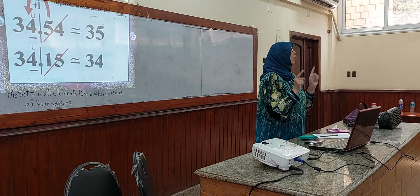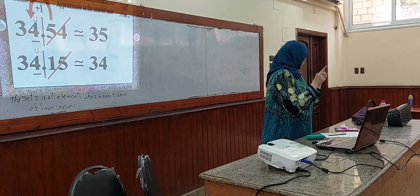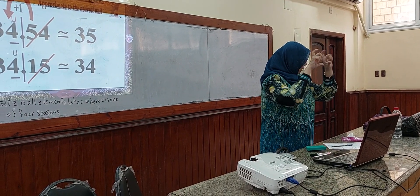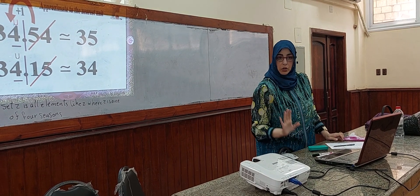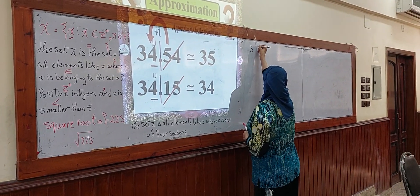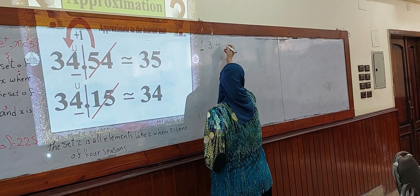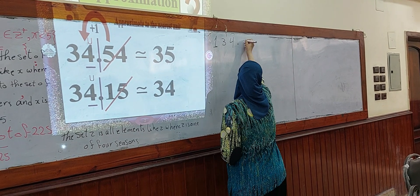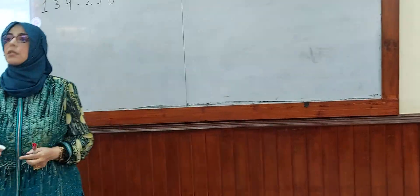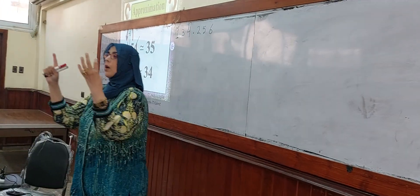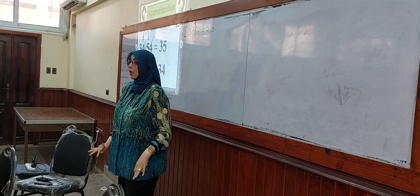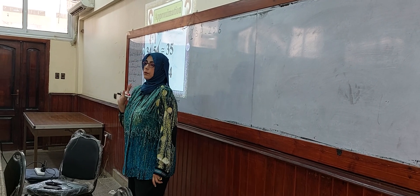I am going to pick only one number and approximate it to different places each time. We have 34, 134, and 256 thousands. We are going to approximate using the same method — one rule for all approximations at every place.